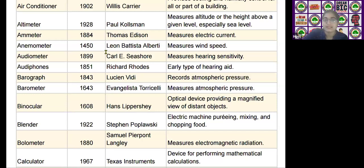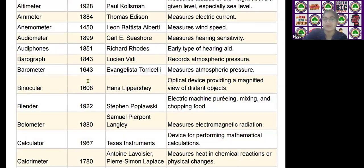The next scientific device is the audiometer, invented by Carl E. Seussure in the year 1899. It measures hearing sensitivity.